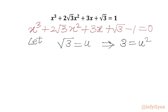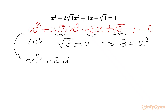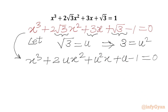We have √3 and 3 in the equation. So we can rewrite it as: x³ + 2u·x² + u²·x + u − 1 = 0.